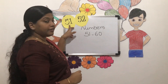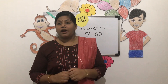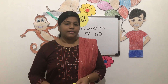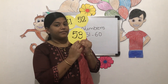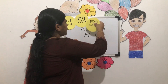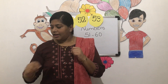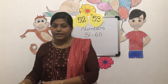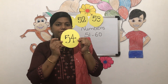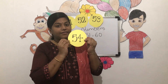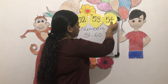Here we have 51 and 52. Now after 52, what is the number? 5 3 — 53. Very good, after 52 it is 53. After 53 we have the next number — what is this? 5 4 — 54. Very good. 5 4, 54.